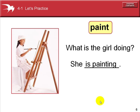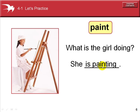What is the girl doing? She is painting. She is the subject, singular third person female, the correct form of the verb to be, and the verb paint with the ing ending.